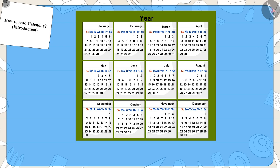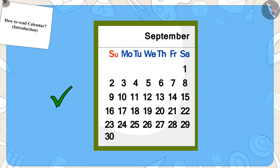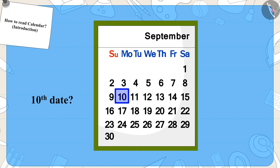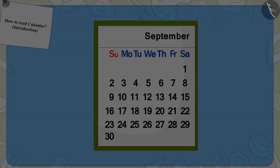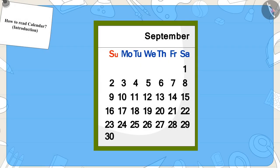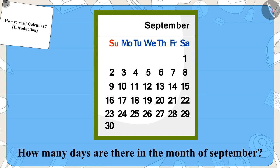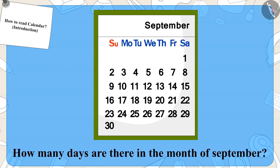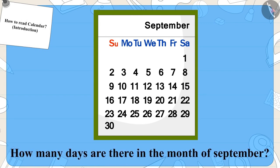Well done kids! You have found it absolutely right! Now, can you find the date 10 in here? That's great! You got the date right! Children, can you tell how many days are there in the month of September? That's right — 30 days!